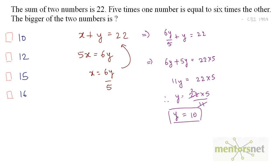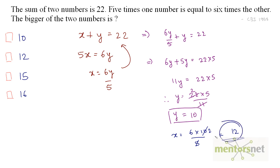Now we need to find the value of x. We know that x equals 6y by 5, so x equals 6 times 10 by 5, and 5 twos are 10, so 6 twos are 12. The value of x is 12 and the value of y is 10, so the greater one is 12.